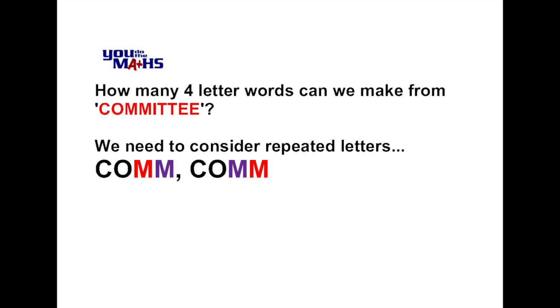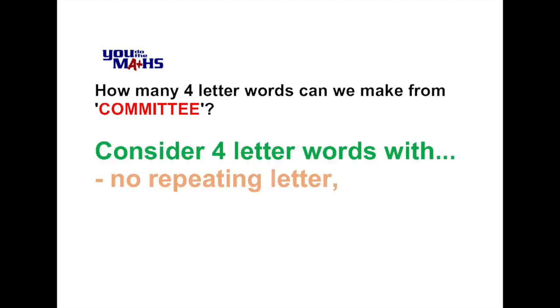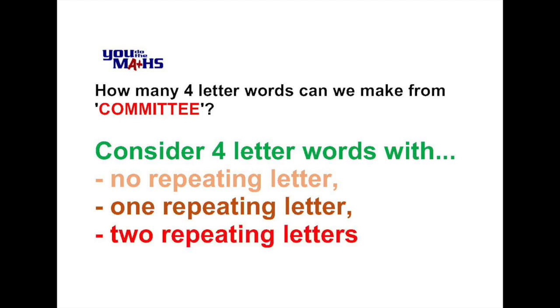What we'll look at is what are the possible things that could occur when we take four letters out of the word committee to form a new arrangement. One thing that could occur is that there's no repeating letters, for example C O M I. Another thing could be one pair of repeating letters, and we could have two repeating letters, for example double M and double T forms one four letter arrangement.